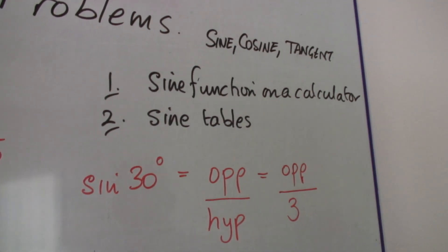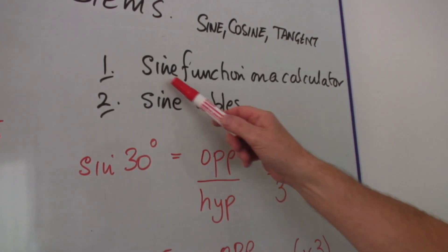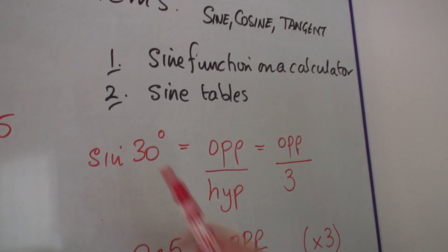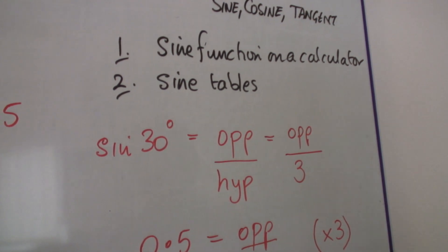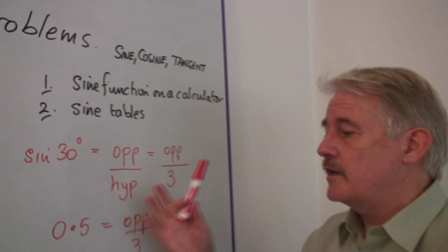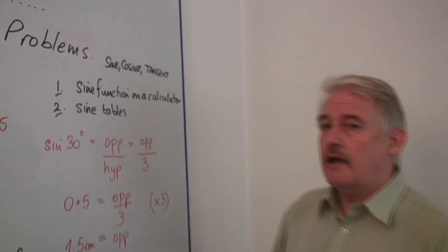Where do we get the actual numbers for sine? Well, if you look on your calculator, you put in the number 30 and press the sine. It'll give you 0.5. It'll tell you what the value is. If you put in 45, you'll get a different value.